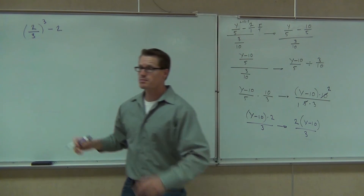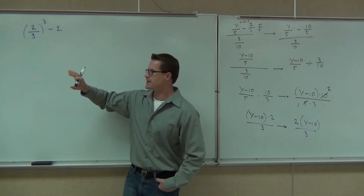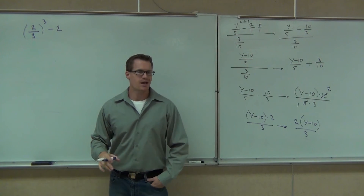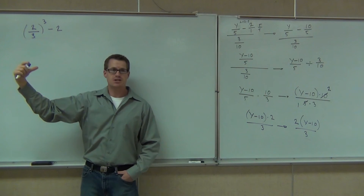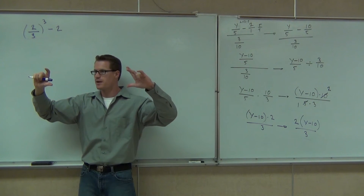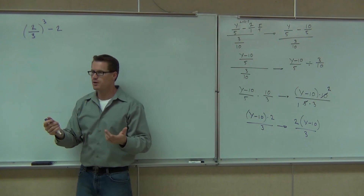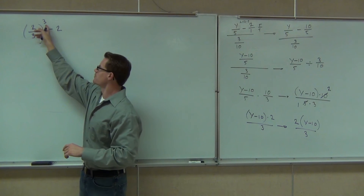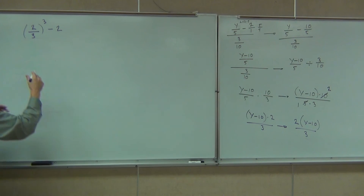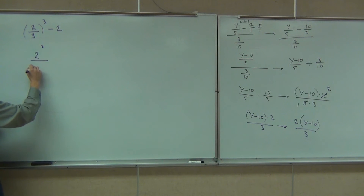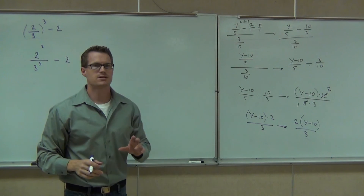Two-thirds cubed minus two. The first thing we check for in any order of operations problem, whether fractions or not, is for parentheses and exponents. We do have some parentheses, but inside the parentheses there's really no operation to do — it's just saying you have this entire fraction raised to the third power. We do have exponents though. Is that exponent applied to just the two, just the three, or both of them? Both. So the first thing we do: we leave the minus two alone and take 2 to the third power and 3 to the third power.